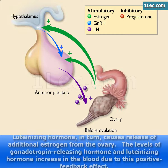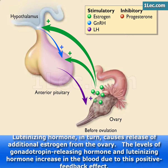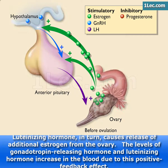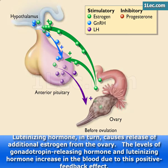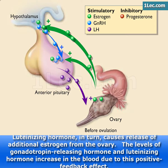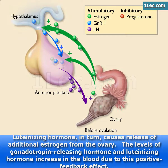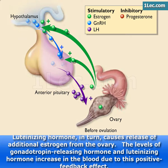Luteinizing hormone, in turn, causes release of additional estrogen from the ovary. The levels of gonadotropin-releasing hormone and luteinizing hormone increase in the blood due to this positive feedback effect.